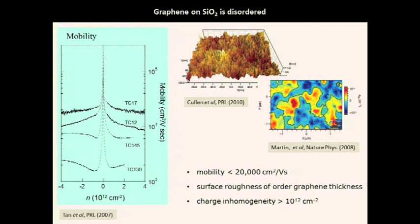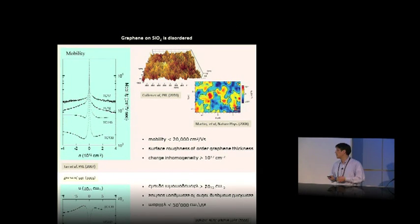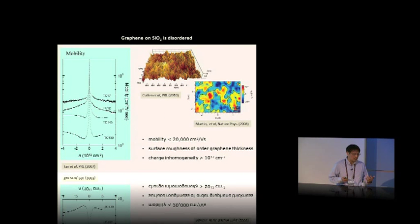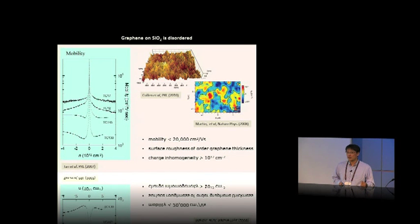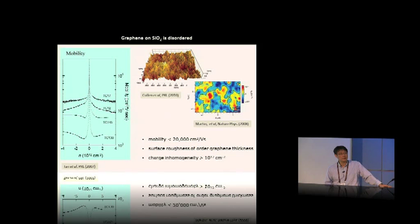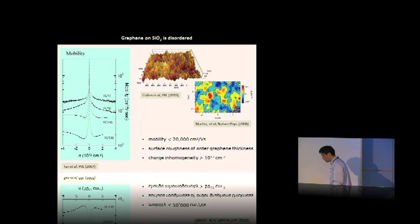Why higher mobility? The past history of the two-dimensional electron gas already told us that whenever you have better samples — better mobility — you start to see different physics. Most of the limitation of sample quality comes from the substrate: roughness, charge puddles, charge traps. Suspending graphene and properly annealing can reach mobilities of millions, even several millions.